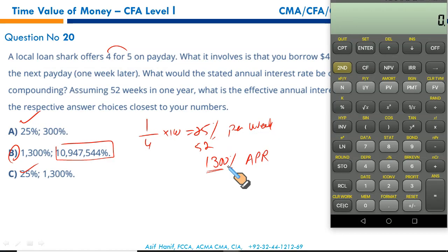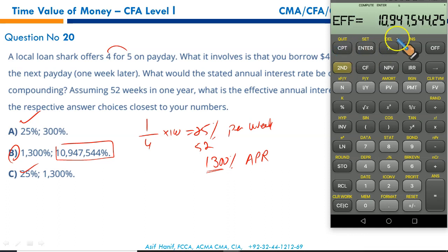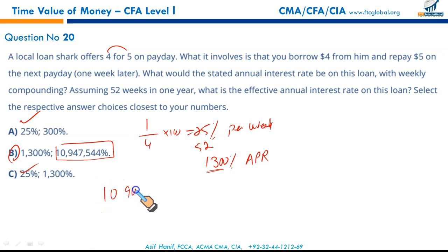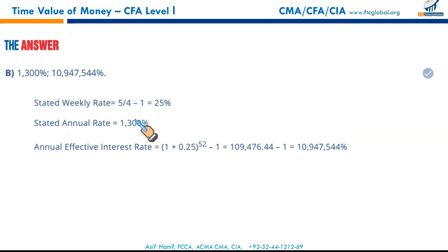Using ICONV: nominal rate = 1,300, enter, up arrow. Compounding frequency = 52 weeks per year, enter, up arrow. Press CPT — the effective annual rate is 10,947,544% — over 10 million percent! That is an extraordinarily high interest rate. That makes B the correct option.